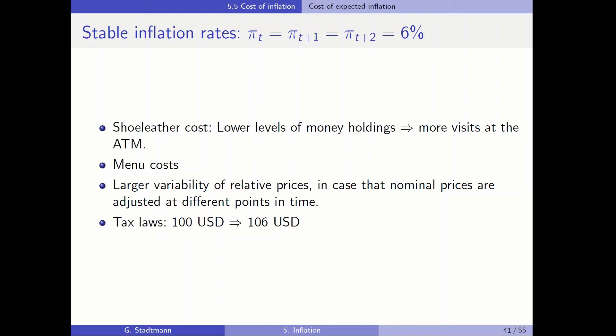Furthermore, when the inflation rate is that high, menu cards have to be printed and adjusted more frequently. We call it the menu cost. Furthermore, when there is an inflation rate, we have a larger variability of relative prices, in case that the nominal prices are adjusted at different points in time. For example, when the milk price is adjusted in January and it increases while the price of orange juice is adjusted in the mid of the year, then in the first half of the year, the milk is relatively more expensive compared to orange juice. So we have fluctuations in the real prices and this can also cause confusion.